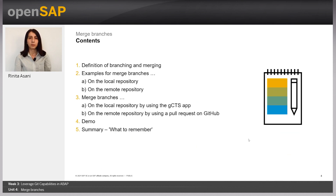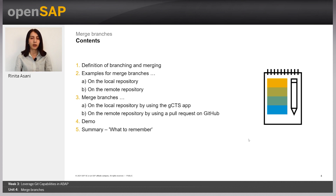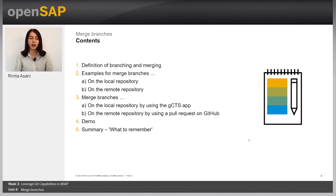Let's see what the content of this unit covers. We will start with defining what branching and merging are. Then we will see some examples for merging branches on the local repository and on the remote repository. Then we will see merging branches on the local repository using the GCTS app, and on the remote repository using a pull request on GitHub. Then we will see a demonstration of the exercises you need to do, and last but not least, we'll make a summary of what you need to remember from this unit.